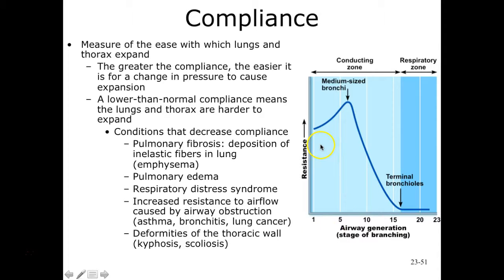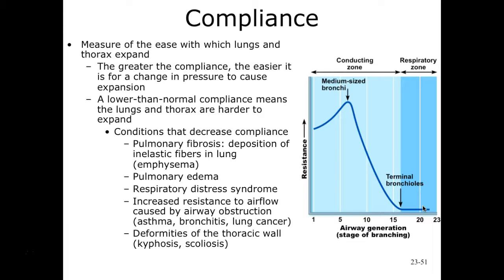There is greater resistance in our medium-sized bronchi, like our secondary bronchi. From there on out, as we branch into our smaller terminal bronchioles and get into our respiratory zone — respiratory bronchi, alveolar ducts, and so forth — we are going to see less resistance as we get into these smaller bronchioles and alveolar ducts.